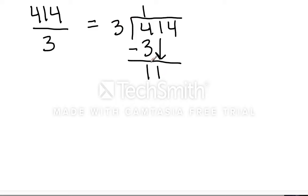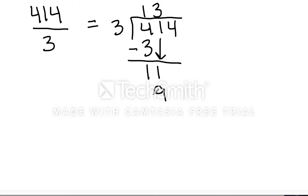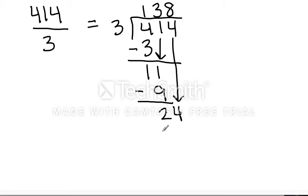This process continues. 11 divided by 3 — how many times does 3 go into 11 without exceeding that number? 3 goes into 11, 3 times. 3 times 3 is 9. Subtract — 11 minus 9 is 2. Bring down the last term. 3 goes into 24 how many times? The answer is 8. 8 times 3 is 24. And when I subtract, I'm left with 0 — a remainder of 0.